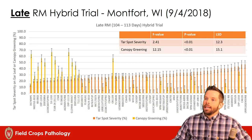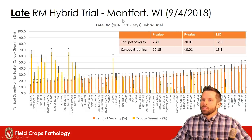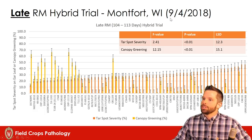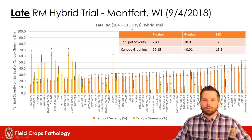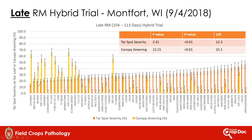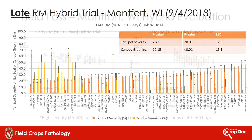Here's a late relative maturity hybrid trial, also in Montfort, right next to the early trial. These data were taken on September 4th, 2018, and these hybrids range from 104 to 113 days. We have tar spot severity on the ear leaves in the orange bars, and they don't really get any higher than 50%. While the data aren't quite as clear as the early RM trial, you can see a corresponding decrease in canopy greening score as the tar spot severity increases.